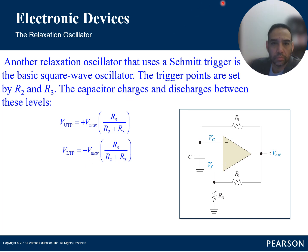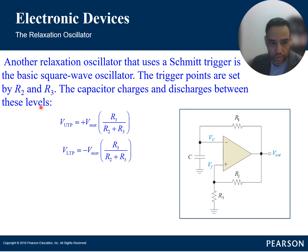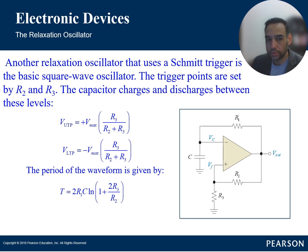Another relaxation oscillator uses a Schmitt trigger to create a basic square wave. The trigger points are set by R2 and R3 — a voltage divider in the amplifier's feedback network — and the capacitor charges and discharges between levels defined by those components. The period of the waveform is: T = 2 × R1C × ln(1 + 2R3/R2). There are many formulas and different oscillator circuits covered in this lecture.